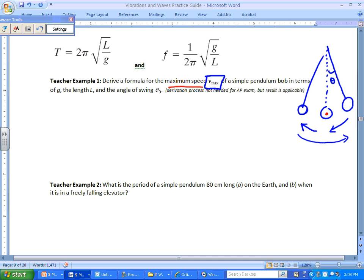You can expect that the maximum speed is going to occur when it's at this lowest point. When it's at this lowest point, all of its energy should be in the form of kinetic, whereas before it might have been in gravitational.